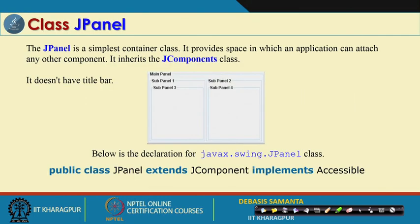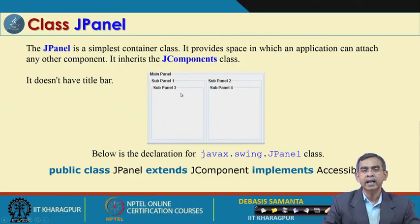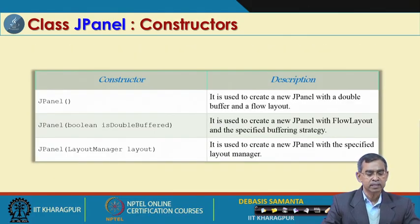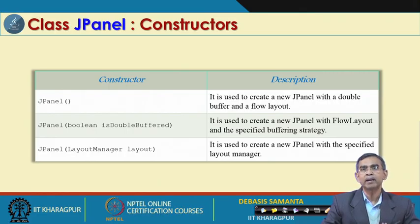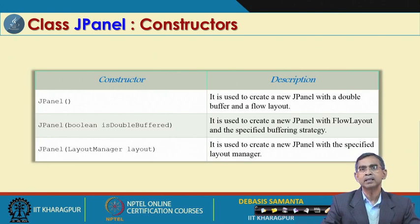JPanel can include panels within panels — it supports nesting, which was not available in AWT. Its constructor takes a boolean for double buffering and a layout manager parameter. The layout manager concept is the same as in java.awt — FlowLayout, BorderLayout, GridLayout, CardLayout — all are applicable here too, which is why they are not separately listed for Swing.